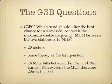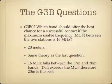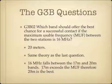Which band should offer the best chance for a successful contact if the maximum usable frequency between the two stations is 16 MHz? The answer on the exam is 20 meters. You use the same theory as the last question: 16 MHz falls between the 17 and the 20 meter bands. The frequencies in the 17 meter band exceed the MUF, therefore 20 meters is the best answer — the frequencies within 20 meters come closest to the MUF without going over.